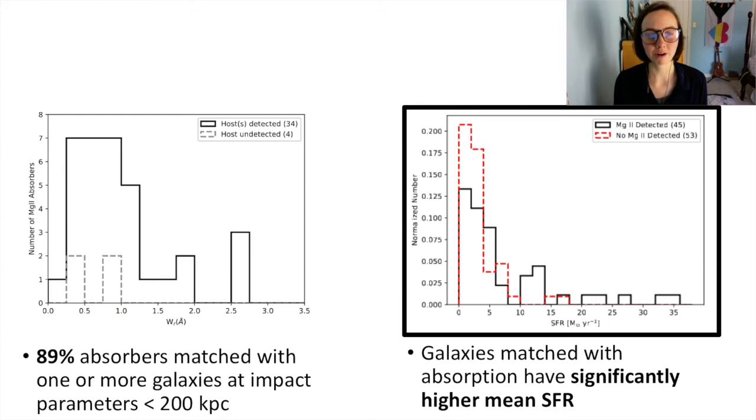In the plot to the right, we compare star formation rates of galaxies that have been matched to magnesium-2 absorption, shown in black, and those that have not, shown in red. Galaxies corresponding with magnesium-2 in the quasar sightline have significantly higher star formation rates. This result supports a model in which magnesium-2 preferentially traces star-forming galaxies.